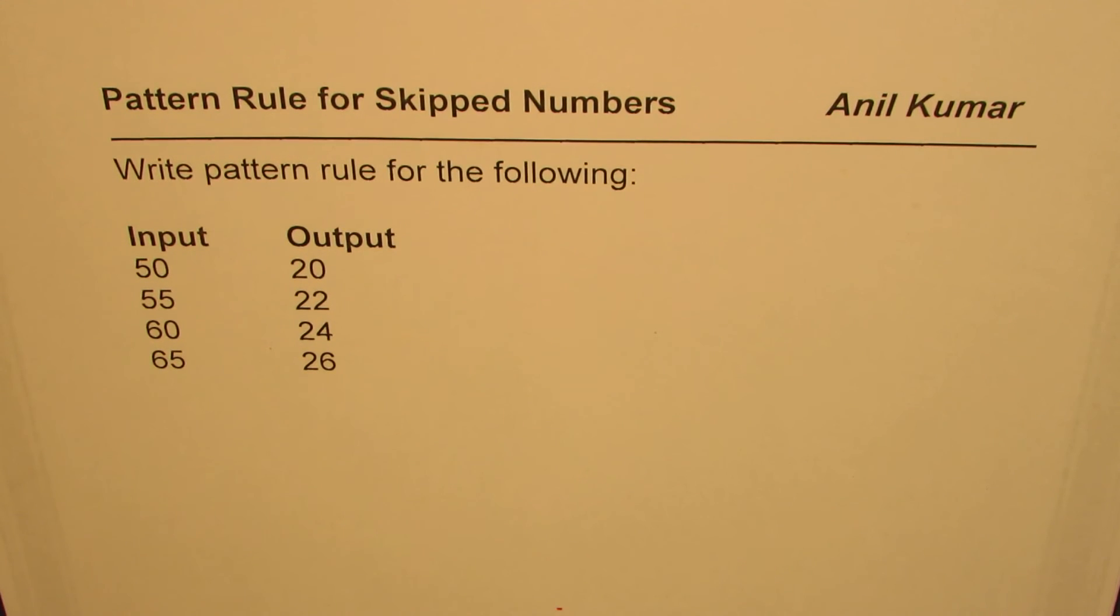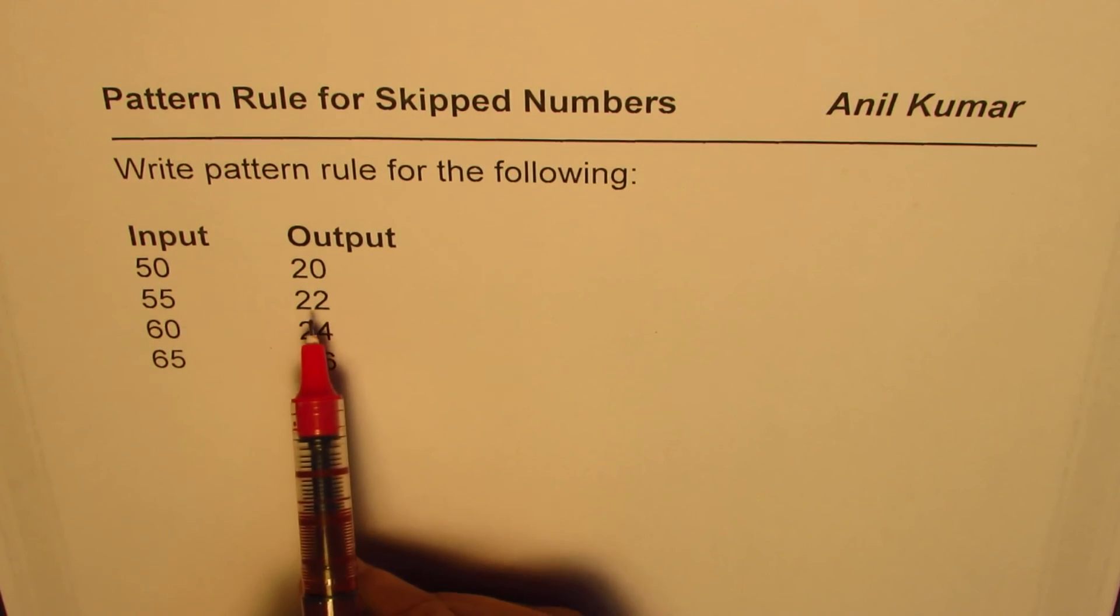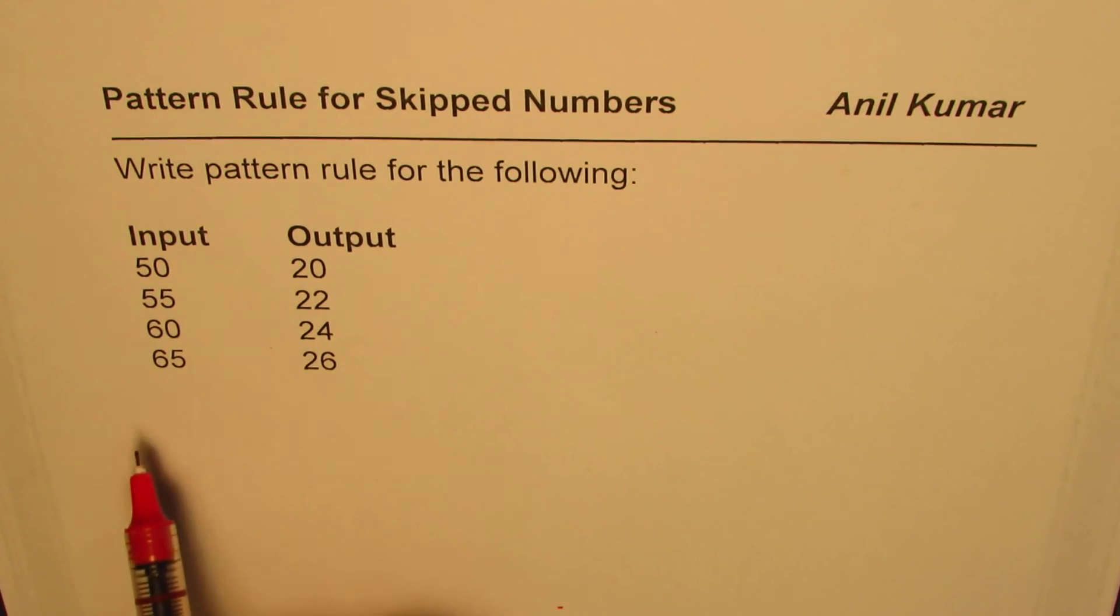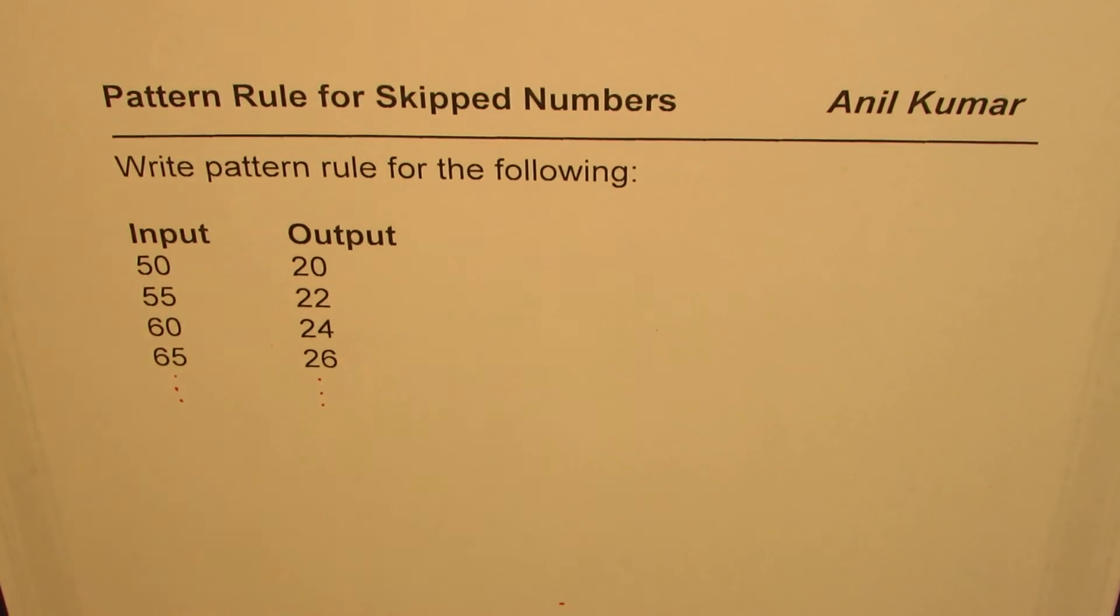I'm Anil Kumar and here is a pattern rule for skipped numbers. The question is: write pattern rule for the following. We are given input and output. Input is 50, output is 20. For 55 it is 22, for 60 it is 24, and for 65 it is 26. Let's say this pattern continues and we need to write a rule which will connect input with output.